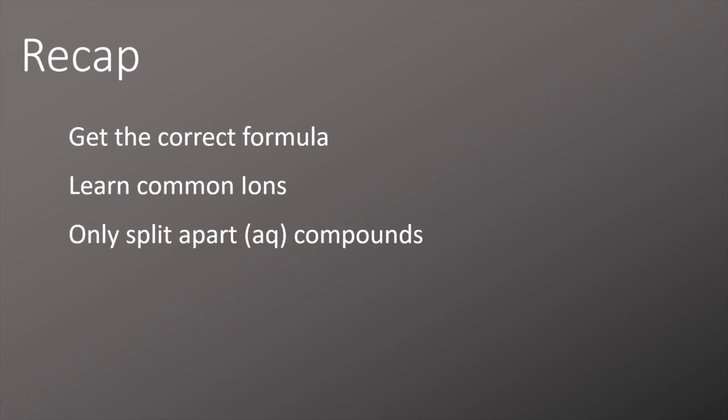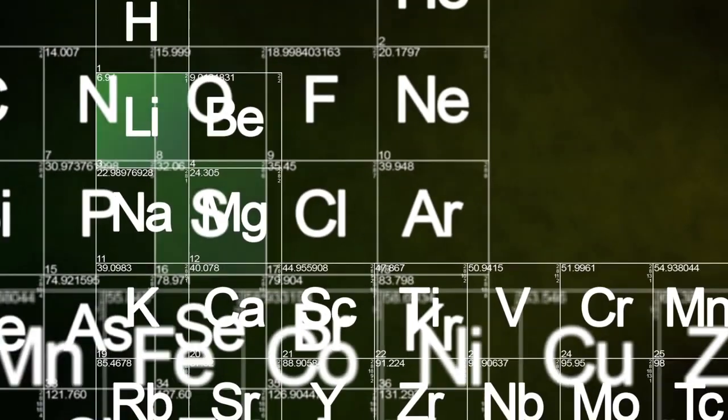Let's recap some of the key points from today. First of all, it's really important to get the correct formula. To do this, it's right to try and learn some of the common ions. Once you've got that, you remember only split apart the aqueous compounds from an equation, and then remove the ions that appear on both sides, writing out a simplified equation once you've done.